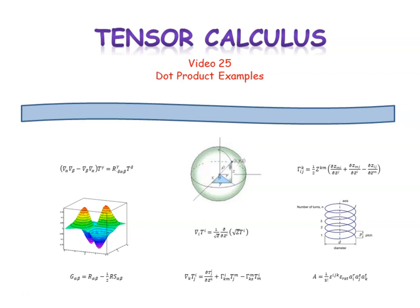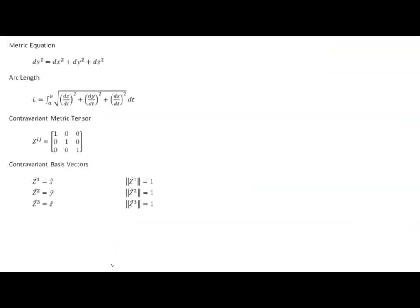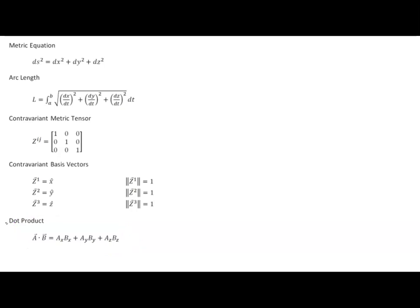In video 25 of Tensor Calculus, we're going to follow up our last video and analyze how our invariant expression for the dot product applies to each of our sample coordinate systems. Here we have the fact sheet for Cartesian coordinates, but we thoroughly analyzed this case back in the last video. So there's really nothing to do except add this fact to the list — that in Cartesian coordinates, the dot product works out to be this no matter which of the four expressions we choose. We'll just move on to affine coordinates.